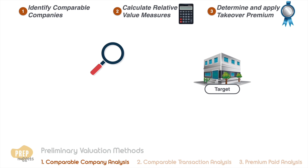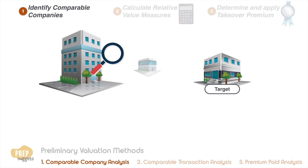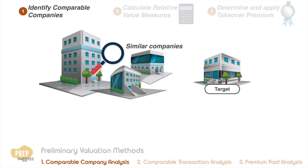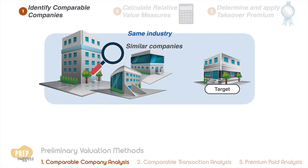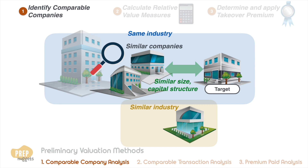The first step involves identifying a set of other companies that are similar to the target firm. Ideally, these companies should come from the same industry as the target and have a similar size and capital structure. This set should be as large as possible, so if there are insufficient similar companies in the same exact industry, companies from similar industries may be included.